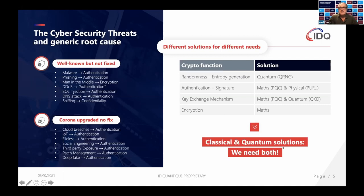On the authentication and signature side, it is typically more or less passwords, sometimes with biometrical data such as face ID and fingerprints. But in the future, this will be augmented by a physical unclonable function (PUF). We announced a corporation with a company called ICTK a couple of weeks ago, and I will mention this in a second as well.